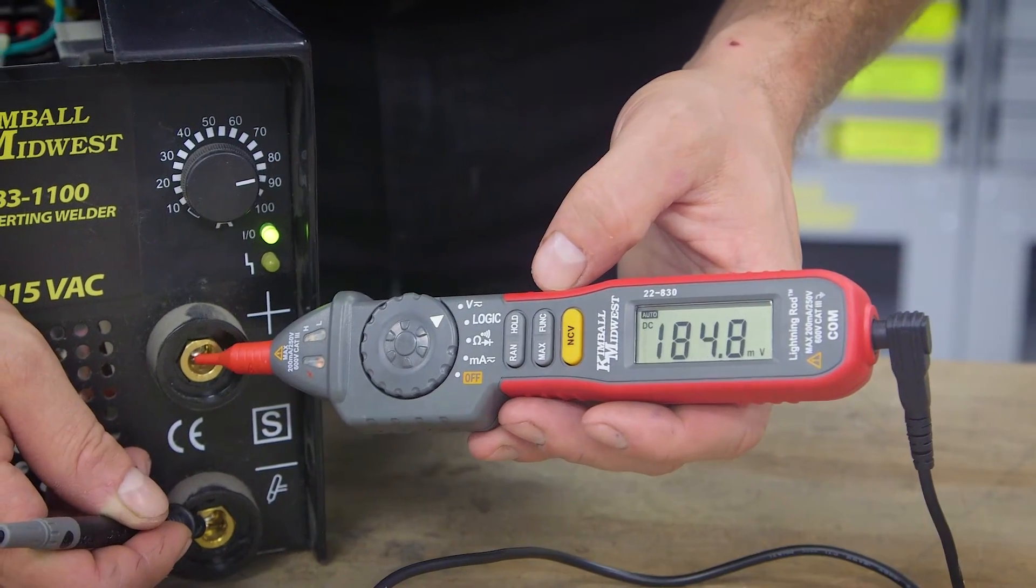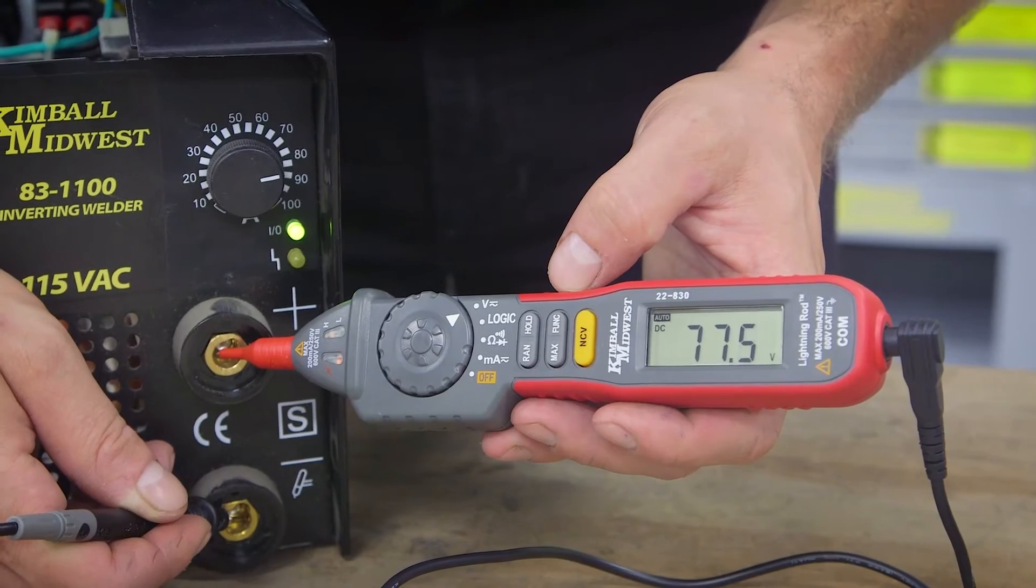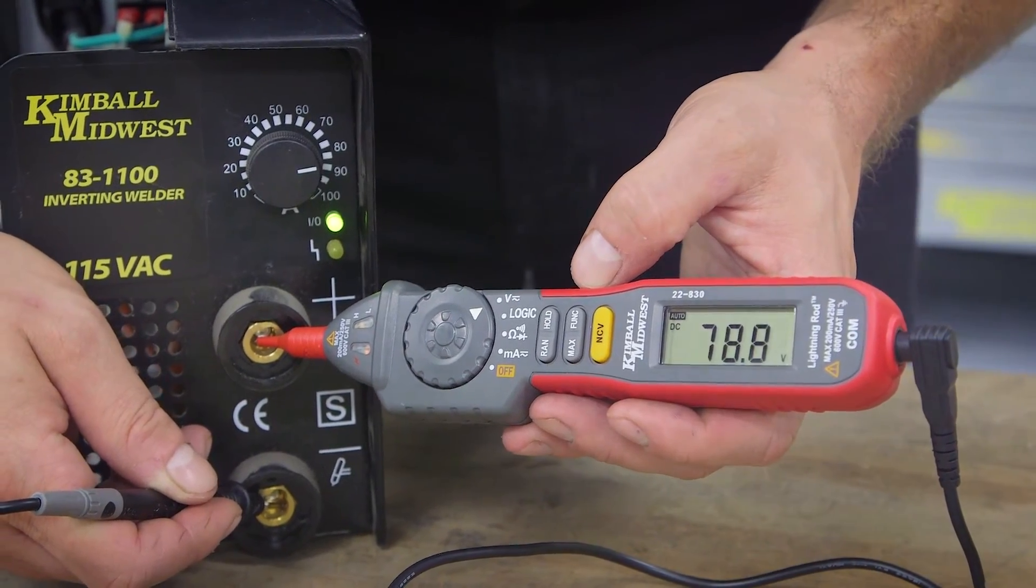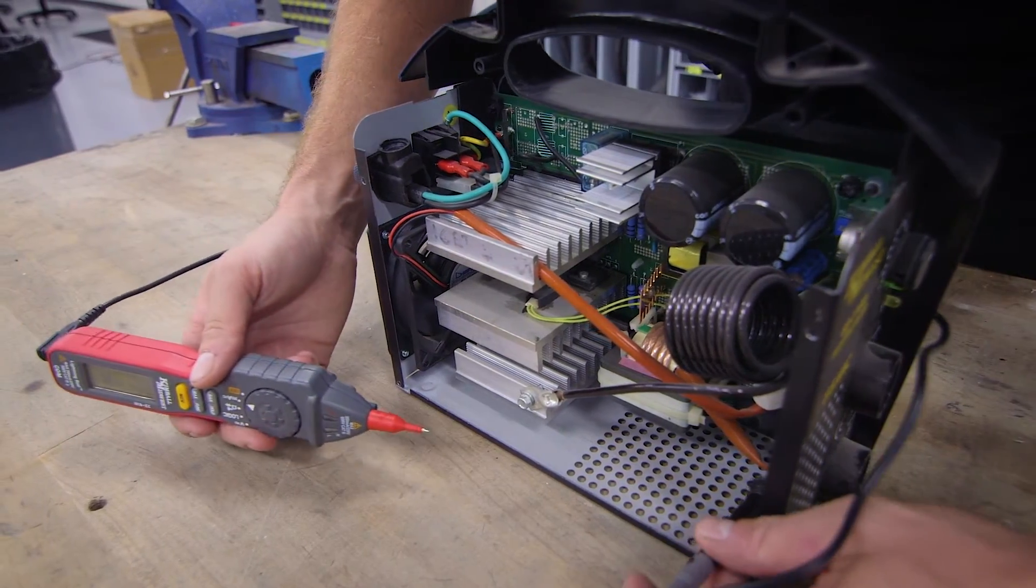It's auto-ranging, so you don't need to adjust a range dial when your hands are full. And it's small in size, but it still meets a Cat3 600-volt rating.